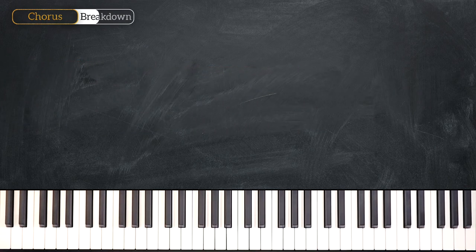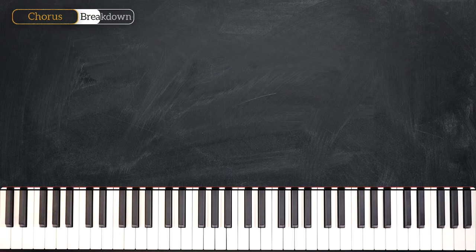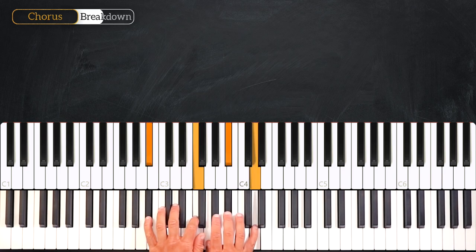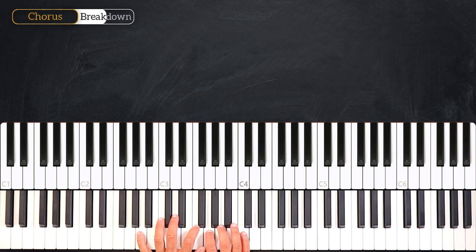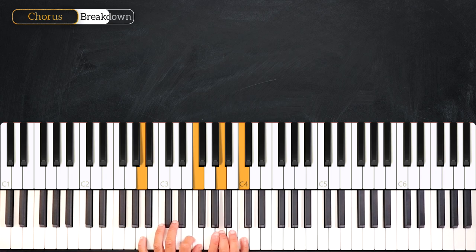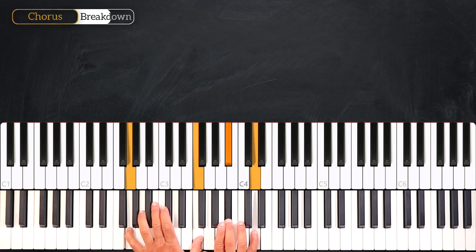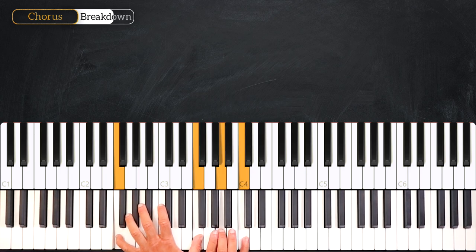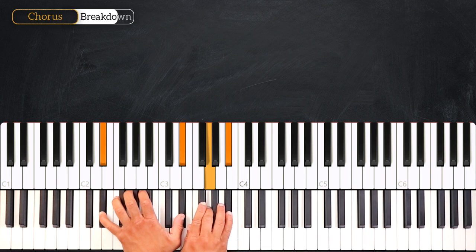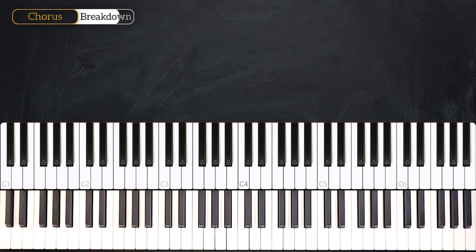Alright, good job guys. Now let's quickly go over all the chords again together. So we start on Bb. Then we'll play F over A. Right into Gm7. And then we'll play F. And we finish on Eb. Good job.